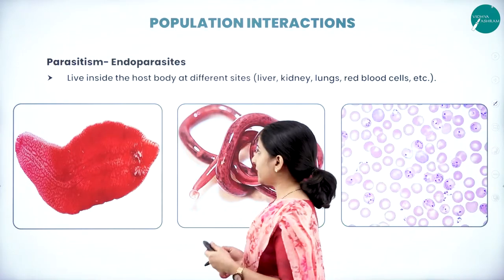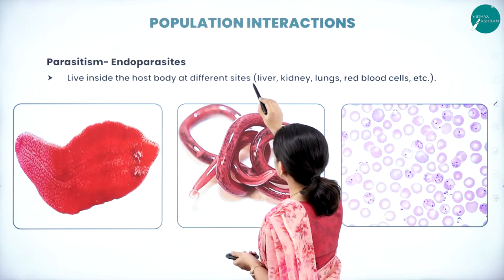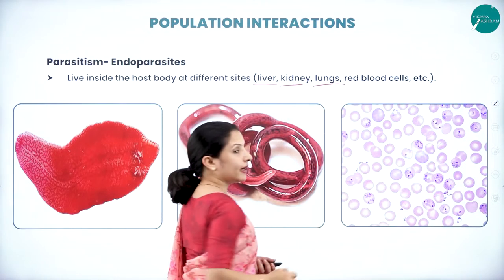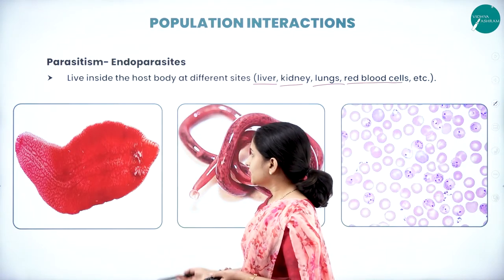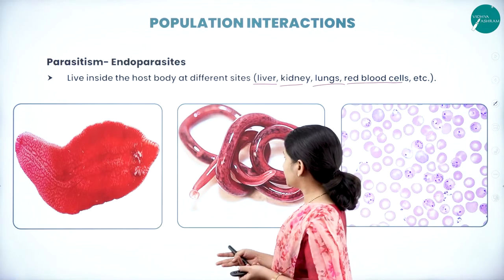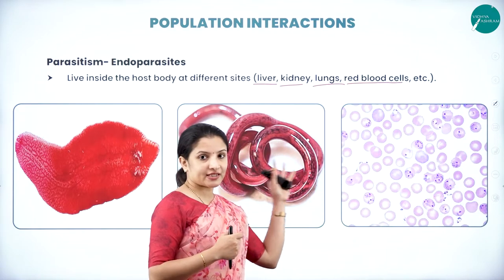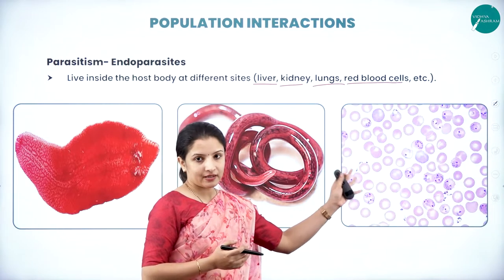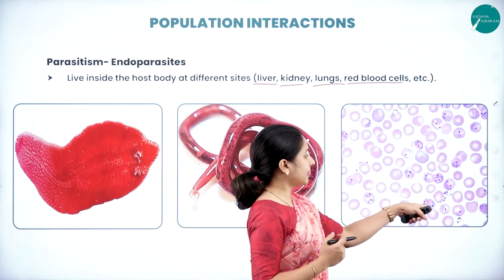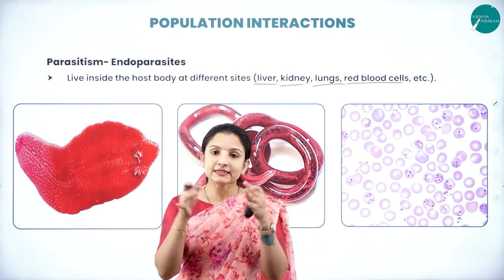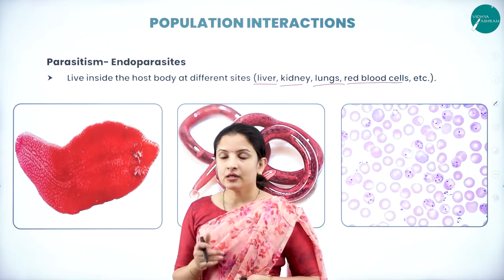Endoparasites live inside the body of the host — in the liver, kidney, lungs, or red blood cells. The liver fluke is present in the liver, roundworms are found in the kidney, and the malarial parasite Plasmodium vivax infects the red blood cells. They are found inside the body of the host, which is why they are called endoparasites.